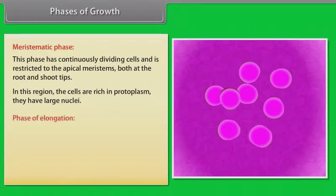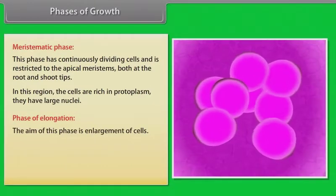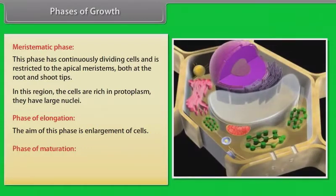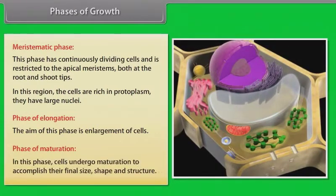Phase of elongation: the aim of this phase is enlargement of cells. Phase of maturation: in this phase, cells undergo maturation to accomplish their final size, shape and structure.